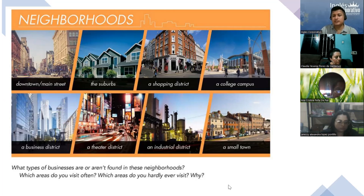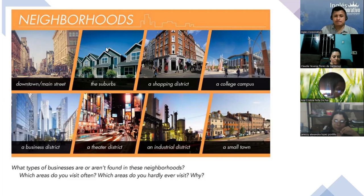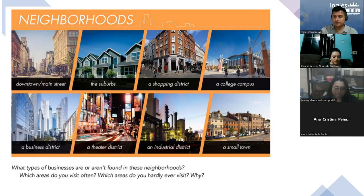Okay, so here we have these places. What are these places, Genesi? The city. In the city, right. Are these small places or big places? Big places. Exactly right. So here we have big places: a college campus is usually something big, an industrial district, a shopping district, the suburbs, a theater district, a business district, downtown or main street, and also a small town.